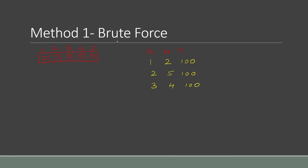The first approach is the brute force approach. Initially we have an array of five elements, all initialized to zero, and we have three different queries. Each query has three integers a, b, and k — a and b are the range and k is the value to add in that range. Let's start with the first query: a is 1 and b is 2, so from index 1 to 2 we need to add 100 to all elements.